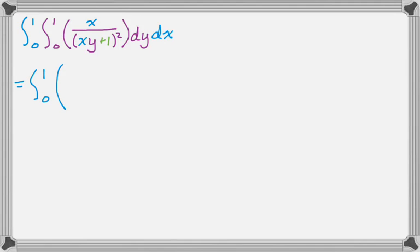So 0 to 1, and then it's going to be with respect to y. So I look at this thing, and I think to myself, if that were just 1 over the quantity y plus 1 squared, that would kind of feel like u substitution, so I'm actually going to do u substitution. So u equals the denominator, so xy plus 1.